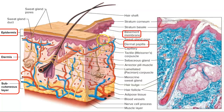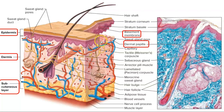These little ridges here are called the dermal papilla — it's like a projection into the epidermis. The distribution of dermal papilla is responsible for your unique fingerprint. They make up the fingerprints, but they also form an important mechanical connection between the epidermis and the dermis. The increase in surface area allows for stronger contact.